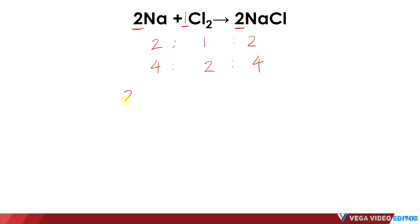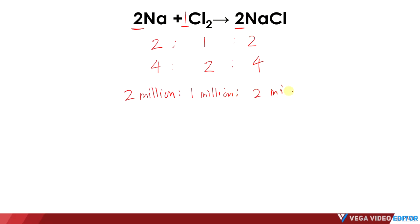But if I have 2 million Na's, how many Cl₂ do I need? From the original ratio, it's obvious that the Cl₂ is always half of Na. So if I have 2 million Na's, then I need 1 million Cl₂, and that can produce 2 million NaCl molecules.